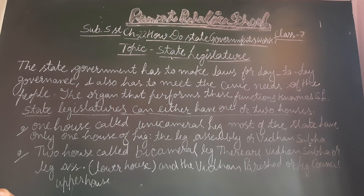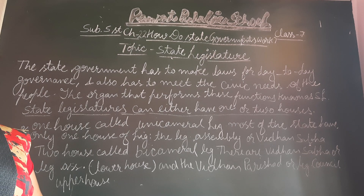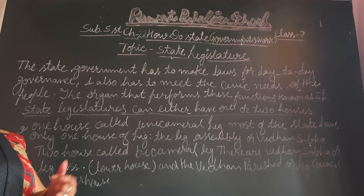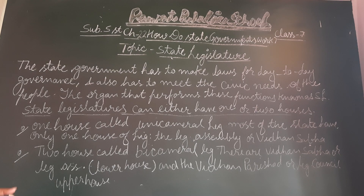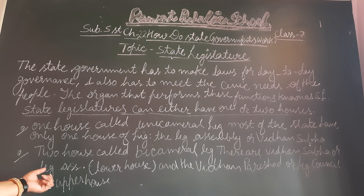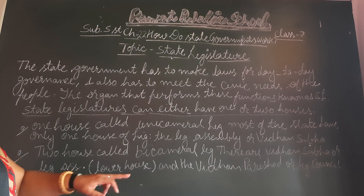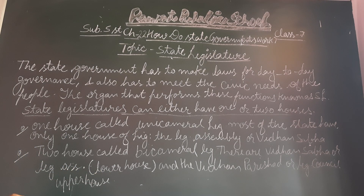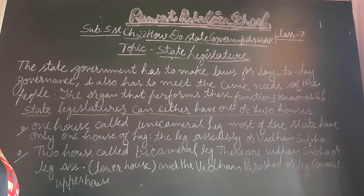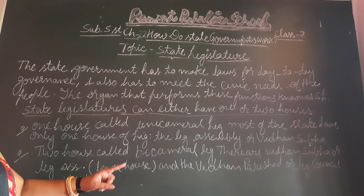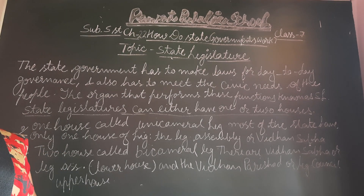In a unicameral legislature system, the house is called Vidhan Sabha. The second type has two houses, called bicameral legislature, which consists of the Vidhan Sabha, or Legislative Assembly, and the Vidhan Parishad, or Legislative Council.